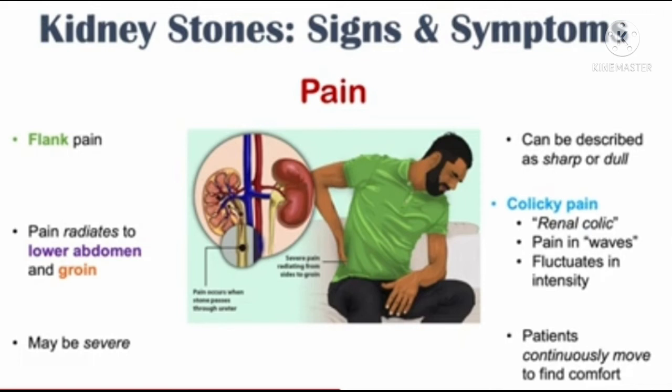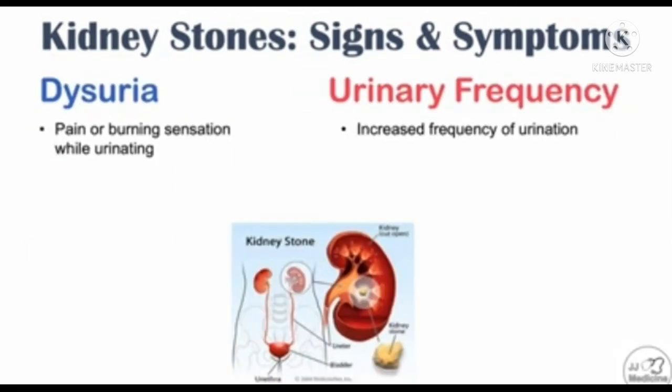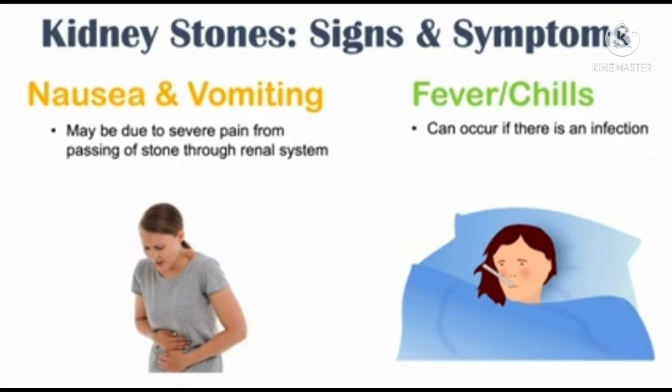Lower abdominal pain also occurs, with pain irradiating to the lower abdomen and groin. Dysuria, which is a pain or burning sensation while urinating, may also be present. Urinary frequency — meaning increased frequency of urination, where continuous urination may occur — is another symptom.